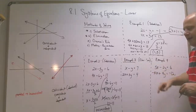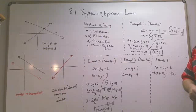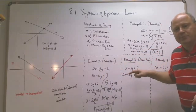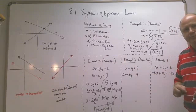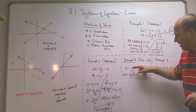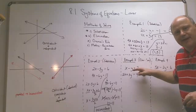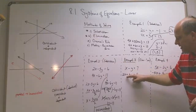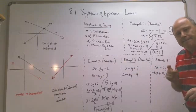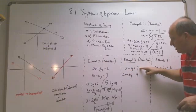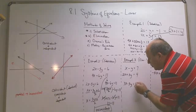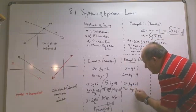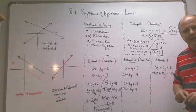Now let's look at one solved by the elimination method. You eliminate one of the variables by adding or subtracting the equations. As they stand, if I add these equations nothing gets eliminated. But if I multiply the top equation by 3, I get 3x minus 3y equals 21. The bottom equation stays the same, and when I add them the y's are eliminated.